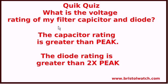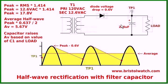What is the voltage rating of my capacitor and my diode? The capacitor rating must be greater than peak, and the diode rating is greater than two times peak. We know that this voltage up here is going to be close to 18 volts peak. If the capacitor is rated only for 15 volts, you're going to blow it. So realistically, you're going to need about a 20 volt or greater capacitor.